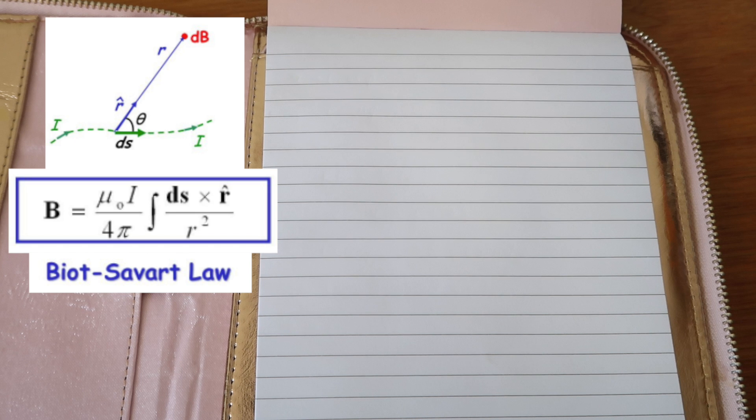A cross product gives a third vector that is at right angles to the original two. We want this since magnetic field flows at a 90 degree angle to current flow.